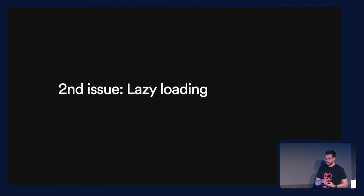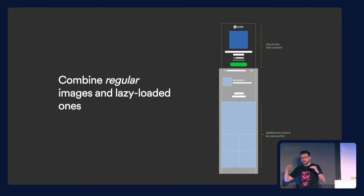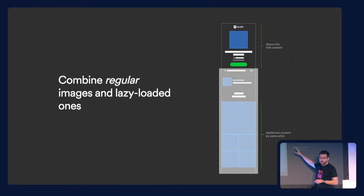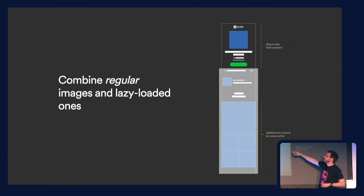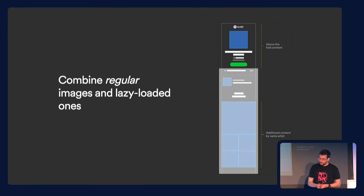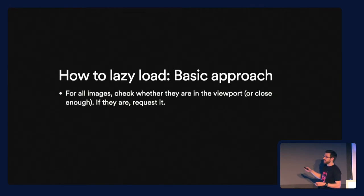The way I've seen working best is some kind of hybrid. On a page for an artist showing album artworks, it doesn't make sense to request all of them when most users will only see a few. There are a couple of ways we can do lazy loading. The basic approach is to check, for all images, whether they are within the viewport, and if they are, request them.